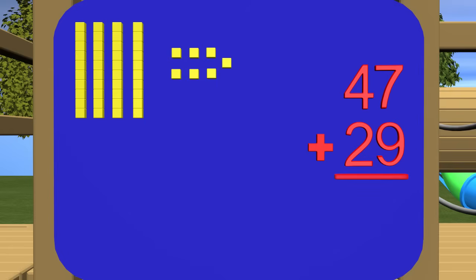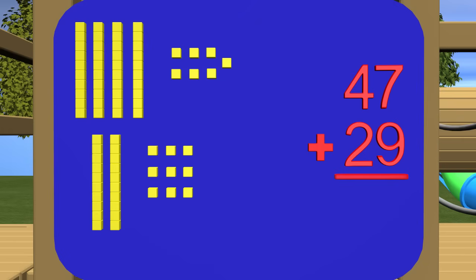Now to represent the number 29. How many tens blocks do we need? How many ones blocks? We need 2 tens blocks and 9 ones blocks. Now we do the same as before and put all of our tens together and all of our ones together.